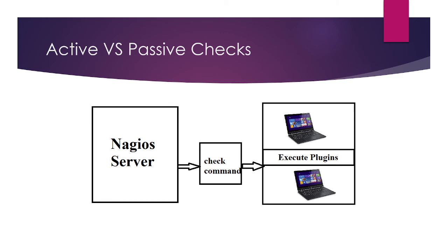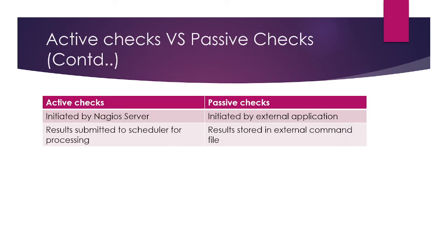This is a diagrammatic representation of active versus passive checks. What we are seeing here is an active check — the check is originated from the Nagios server using a check command, plugins execute, and the result is sent back to the Nagios server. For passive checks, they are initiated by an external application, the results are submitted to the scheduler for processing, and stored in an external command file.